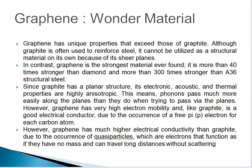Next is the graphene material. Graphene has unique properties that exceed those of graphite. Although graphite is often used to reinforce steel, it cannot be utilized as a structural material on its own because of its shear properties. We cannot use graphite as a structure or device material. In contrast, graphene is the strongest material ever found — more than 40 times stronger than diamond and more than 300 times stronger than A36 structural steel.